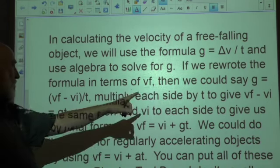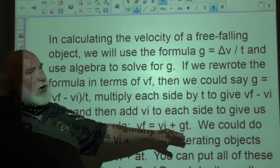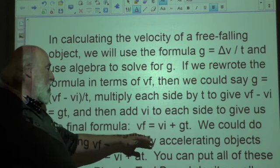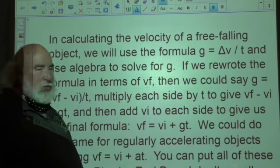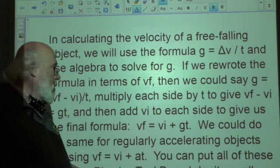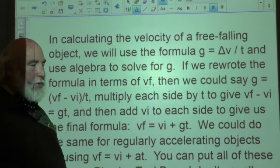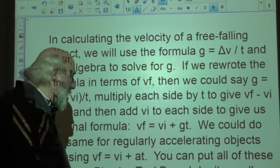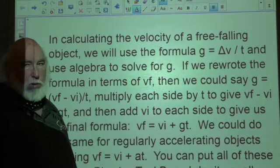And then we add vi over, and we get this formula. So this is now a new formula we can use for our physics toolbox. If we want to find the final velocity of a dropping object, we take its initial velocity, which most of the time will be zero, plus the gravitational acceleration times the amount of time it took to drop. Now, if you throw an object down, you have to know the speed at which you threw the object down as your initial velocity. But if you just let it drop, that's always going to be zero.